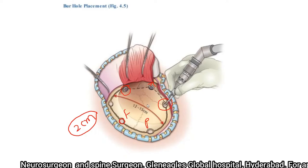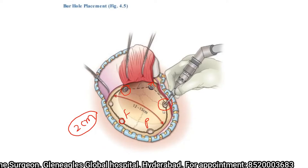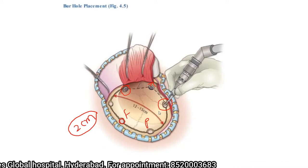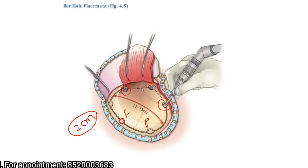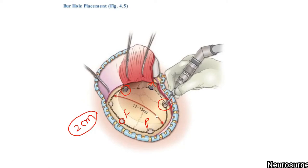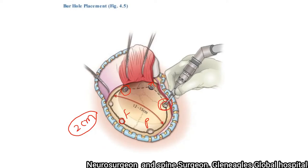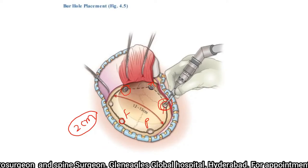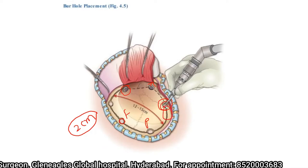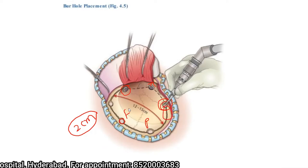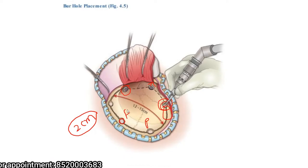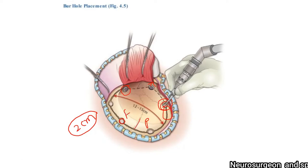Once sufficient burr holes are placed, a number three Penfield is used to strip the dural attachments from the undersurface of the calvaria. I prefer to place multiple burr holes so that at each burr hole I can use a periosteal elevator and number three Penfield to strip the dura from the calvaria and along the line of craniectomy. This ensures the dura is not cut while elevating the bone flap — this is especially important in elderly patients and at suture lines like the coronal suture where the dura is tightly adherent to the skull.